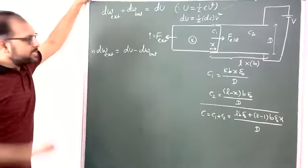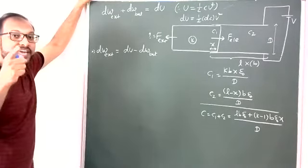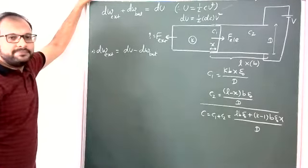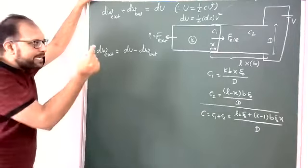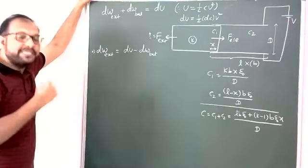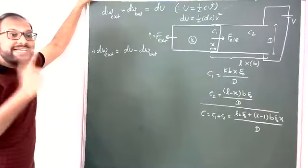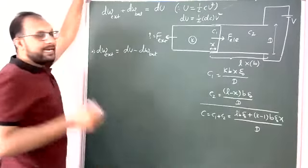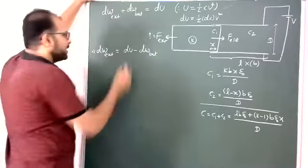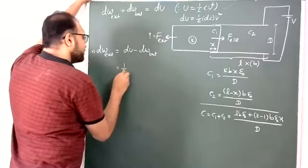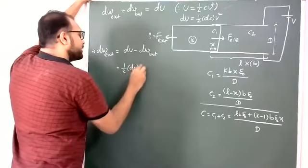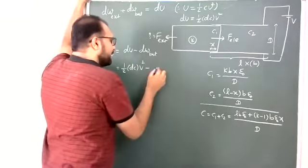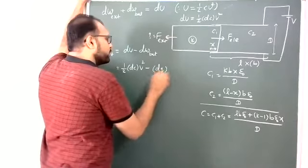Now, work done by the external agent equals dU minus work done by the battery. But students, work done by the battery is V times dQ, because dQ charge is passing through the battery. For a small displacement of the dielectric slab, dx, there is an extra charge dQ. That is why work done by the battery is dQ times V.